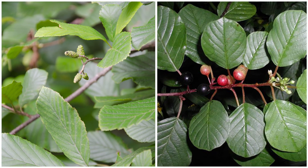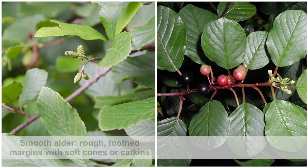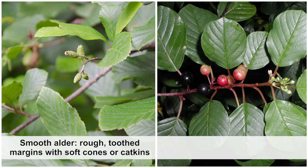Similarly, smooth alder can also be easily confused with glossy buckthorn, but alder leaves have a roughly toothed margin compared to glossy buckthorn's smooth leaf edge. Additionally, throughout much of the year, smooth alder holds soft cone-like structures called catkins, which are very different from the flower and fruit structures of glossy buckthorn.